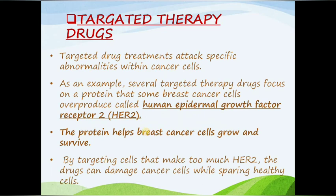The next is targeted therapy. Targeted drug treatments attack specific abnormalities within cancer cells. As an example, several targeted therapy drugs focus on a protein that some breast cancer cells overproduce, called HER2 (human epidermal growth factor receptor 2). This protein helps breast cancer cells grow and survive; by targeting cells that make too much HER2, the drugs can damage cancer cells while sparing healthy cells.